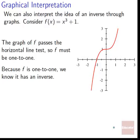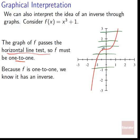How can we interpret inverses graphically? Consider f(x) = x³ + 1. We know this is one-to-one because it passes the horizontal line test — any horizontal line can only cut it in one place. Even where it seems to flatten out, it's still moving because x³ + 1 never actually stops going up; it just slows down. So it passes the horizontal line test, it's one-to-one, and therefore it has an inverse.